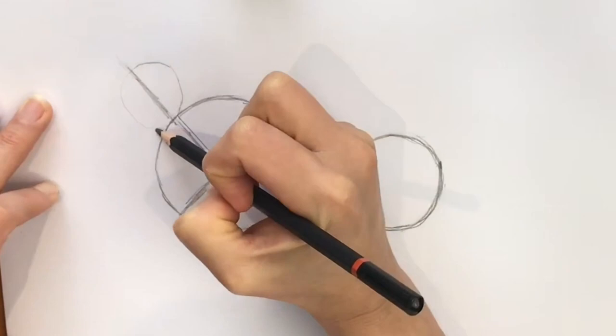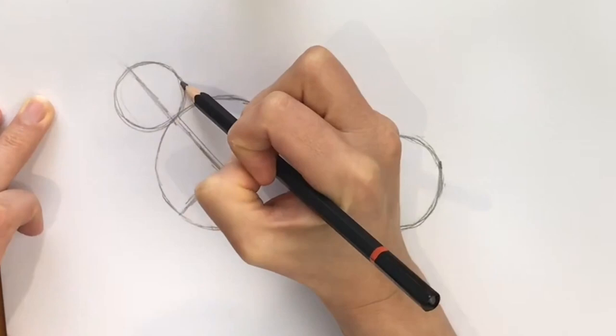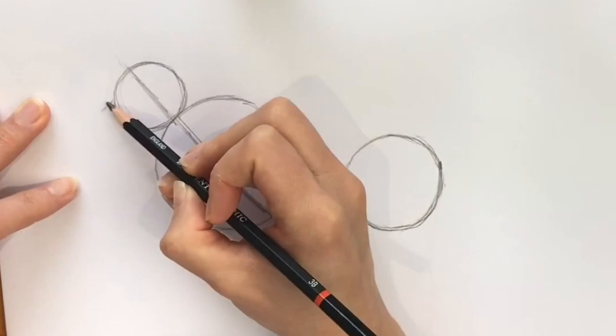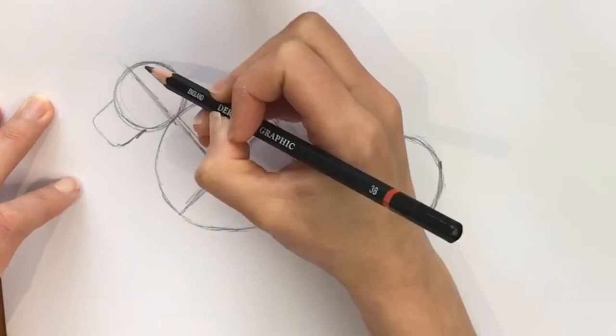Lastly, we're going to draw the muzzle, and then the ear which is like an N shape.